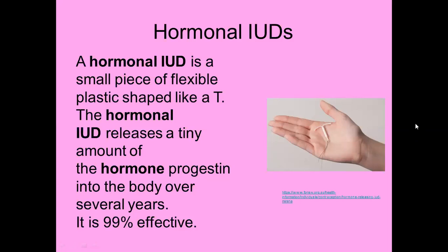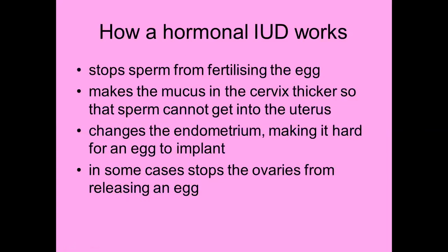The second kind of IUD is hormonal — no copper. They slowly release progestin, which is artificial synthetic progesterone, over several years into the body. They are 99% effective. They stop sperm from fertilizing the egg, thicken the mucus of the cervix so sperm can't get into the uterus, and change the endometrium making it difficult for an egg to implant. Because they release progesterone, this inhibits FSH secretion — without FSH, no follicle matures, no egg is released.